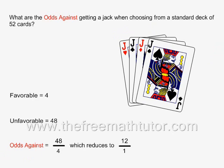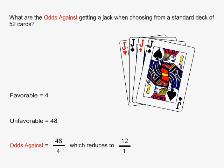In this example, what are the odds against getting a jack when choosing from a standard deck of 52 cards?